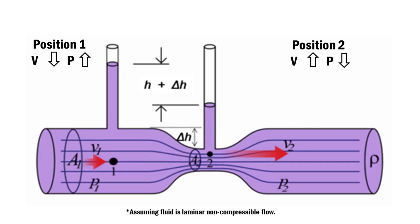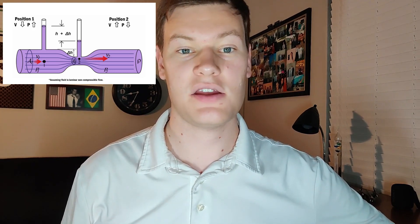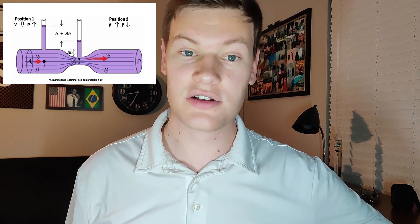We can see the same thing happen when we put our thumb over a garden hose — the water will speed up. As the law of conservation of energy tells us, the energy in the water has to remain the same at point one and point two: the wider portion of the tube and the more narrow portion. Since the velocity in the narrower portion increases, the pressure has to decrease to compensate. So in other words: velocity goes up, pressure goes down. And as velocity decreases, the pressure increases.